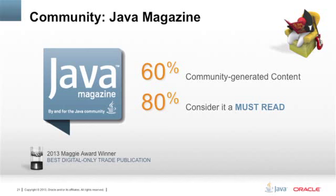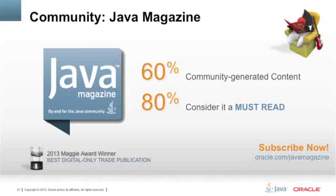Java Magazine is a free digital magazine that provides Java how-tos, news from the community, news about new books, events, and conferences, and much more. What you may not know is 60% of the content is actually generated by you, and 80% of you actually consider it a must-read. The latest issue of Java Magazine is focused on Java EE 7 with lots of content from the community. I highly encourage you to subscribe to the magazine and even think about contributing an article next time.